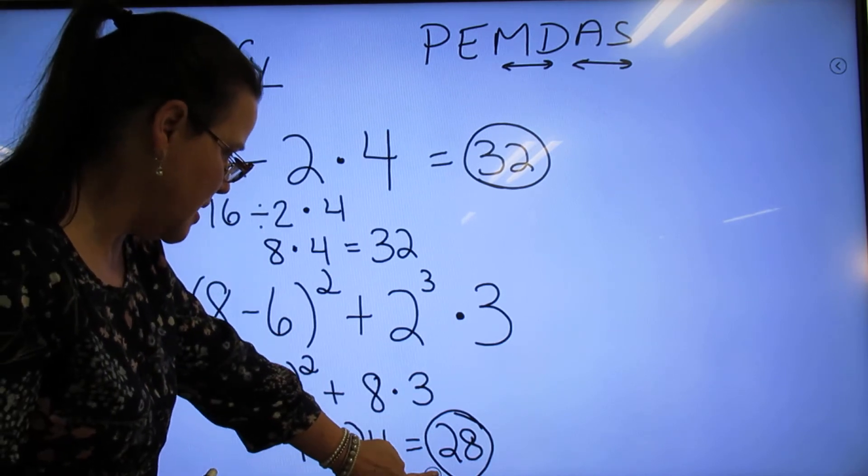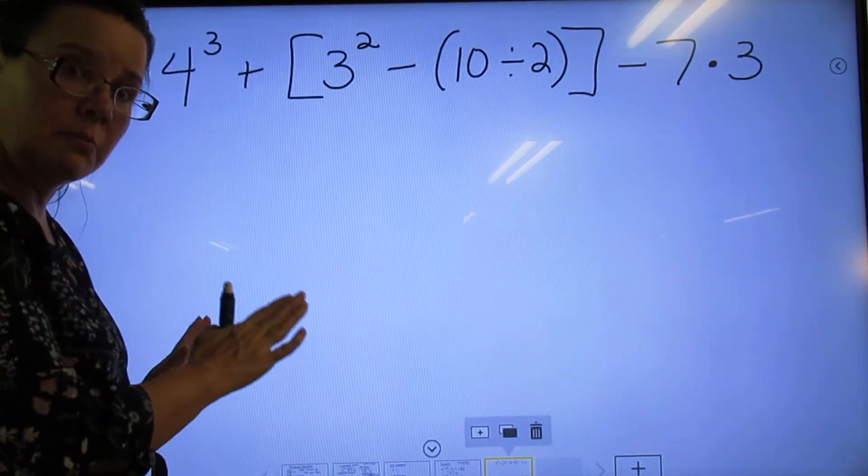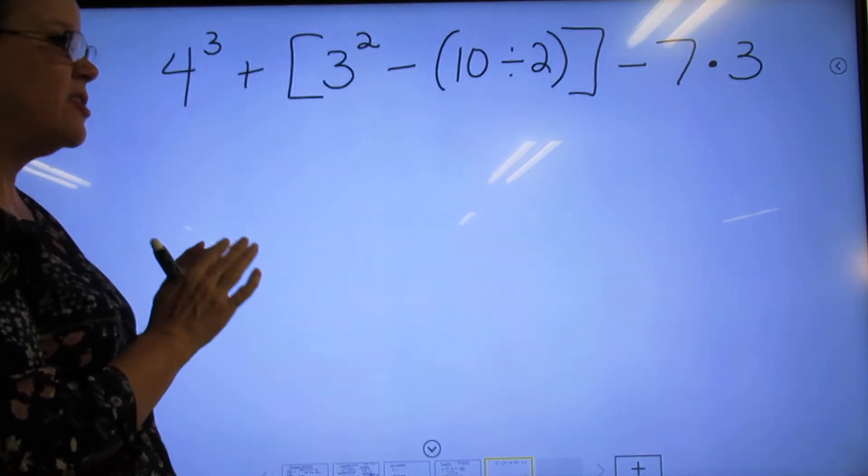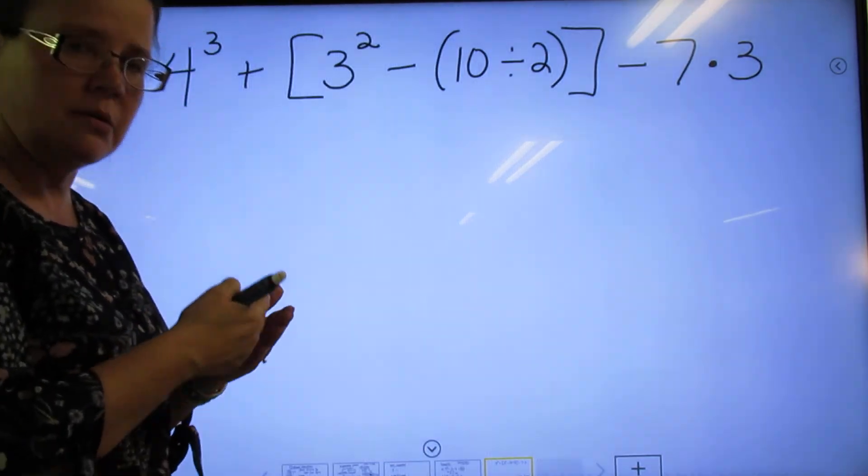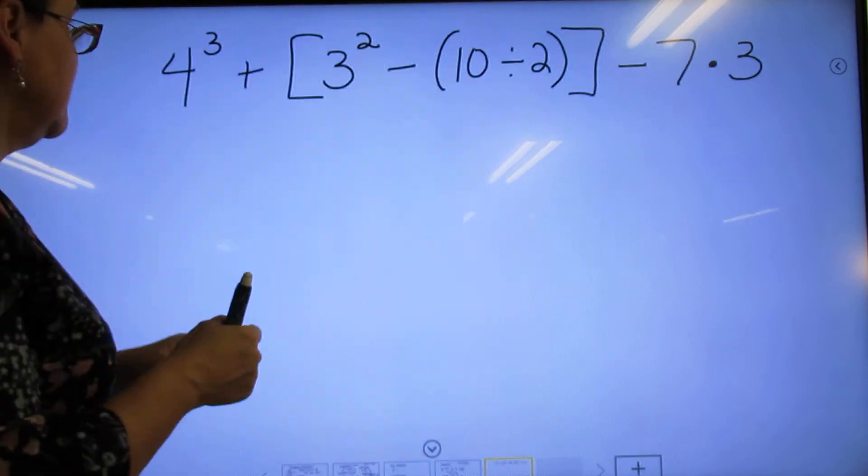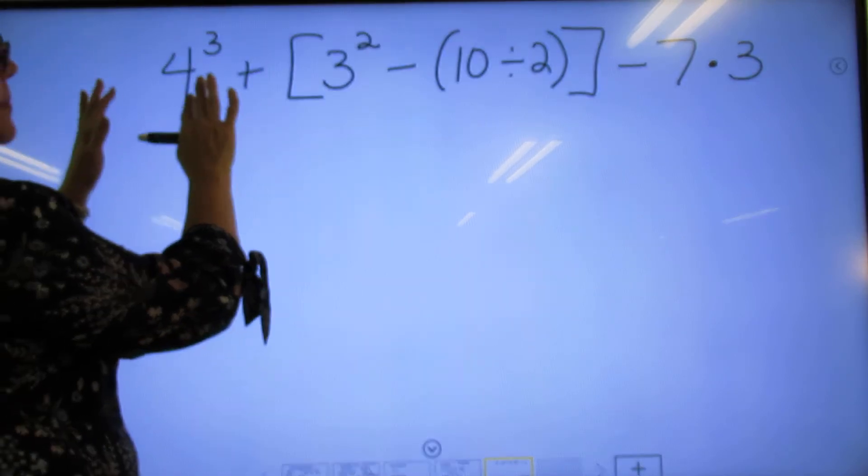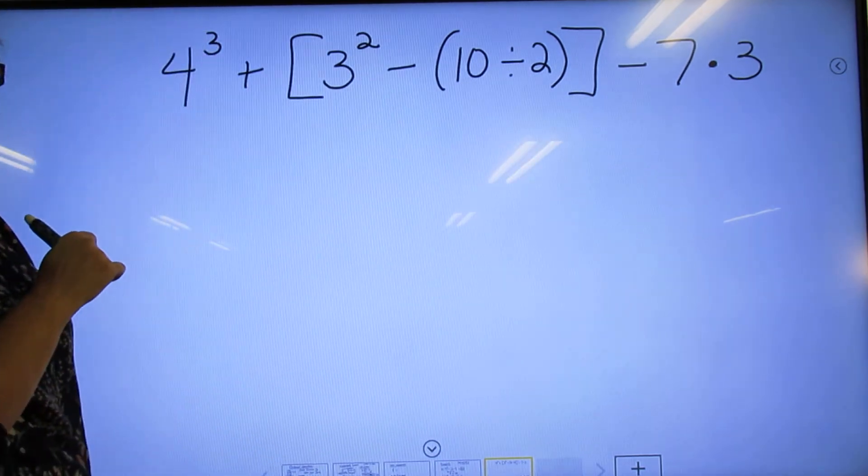But in the meantime, we have one more problem, and then we're going to be done with orders of operations for regular numbers and operations stuff. You're going to see this again when we get into algebra with the variables and exponents and all that good stuff in there. So here I put this problem up because it has brackets and parentheses.